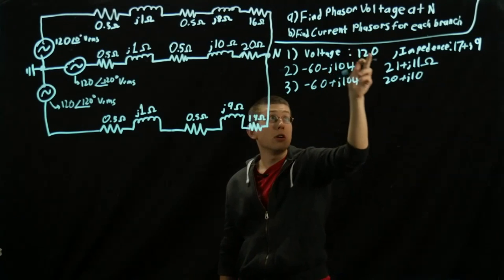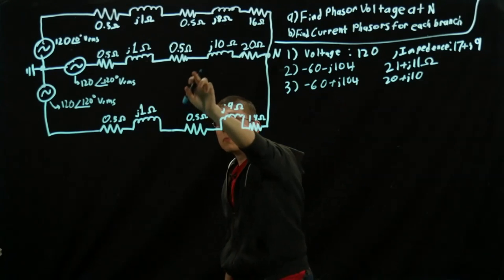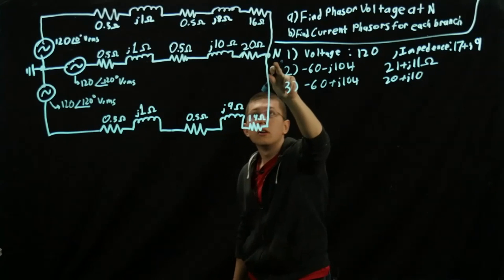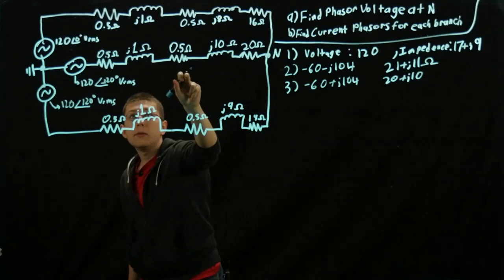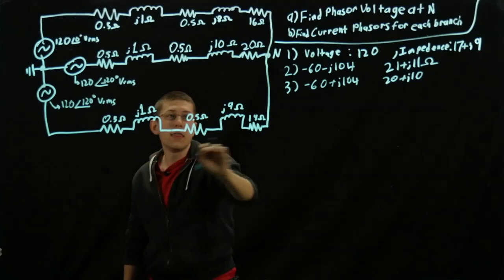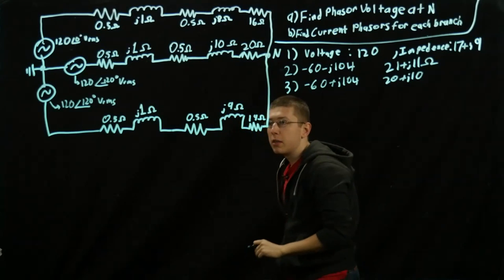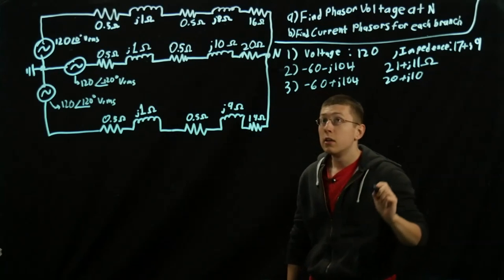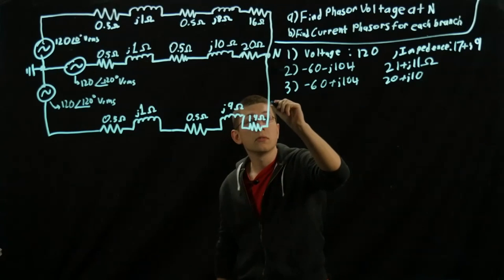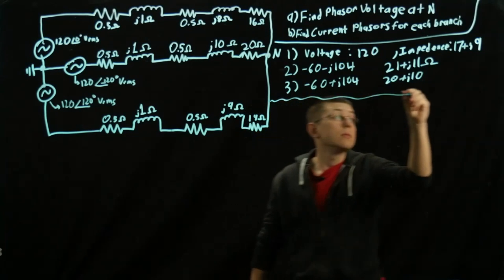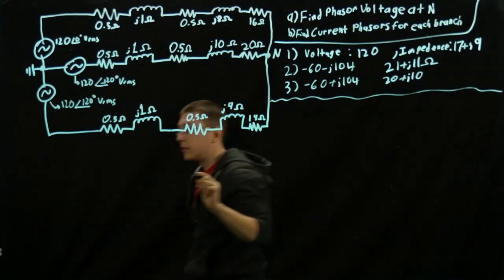So starting with part A, to find the voltage here, the general idea is we're going to find the current and then multiply by the sum of the resistances. So let's get started down here.